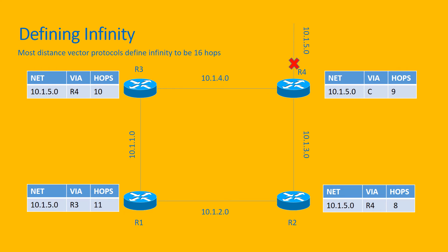The way to alleviate the effects of counting to infinity is to define infinity. Most distance vector protocols define infinity to be 16 hops. Let's consider this network diagram along with the current status of the routing tables of each router.